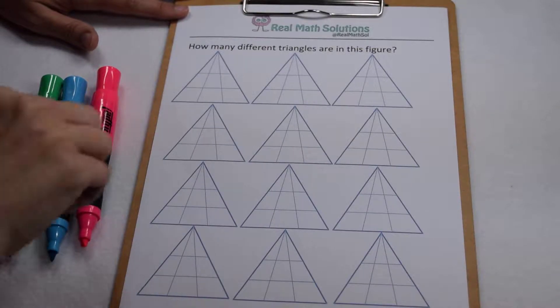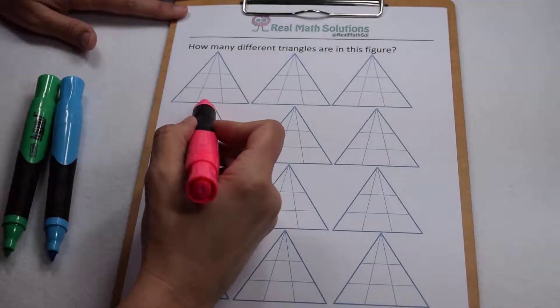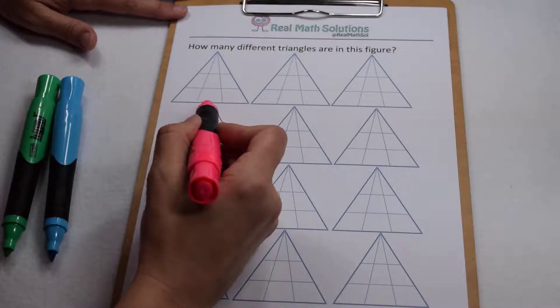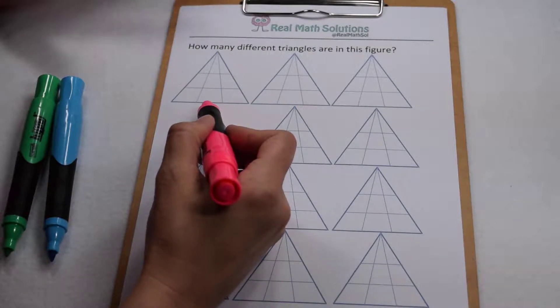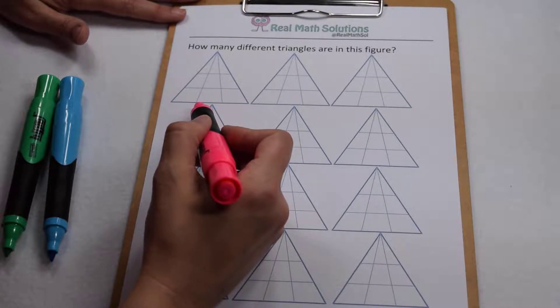This is another one of those puzzles I saw on social media. They gave you this large triangle figure and wanted to know how many smaller triangles are contained within it. Answers I saw ranged from six and up, so let's see how many we can find.